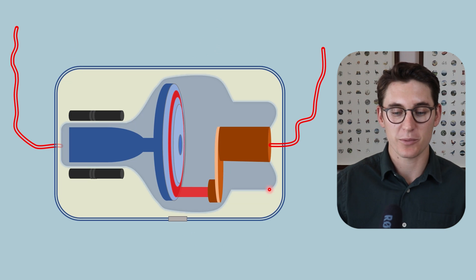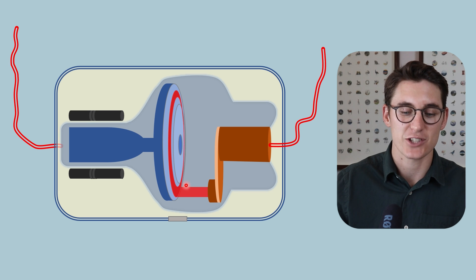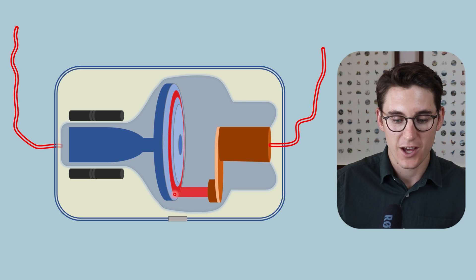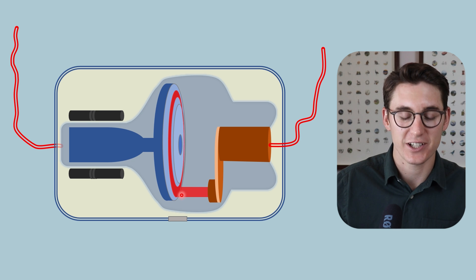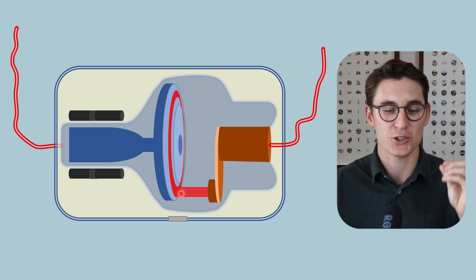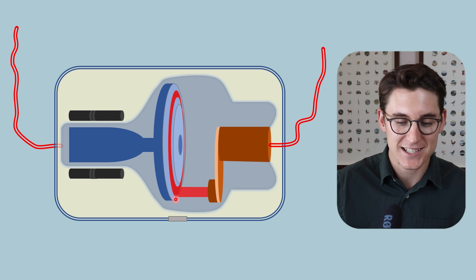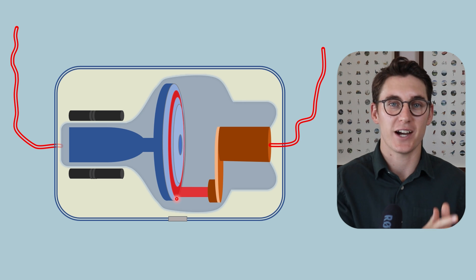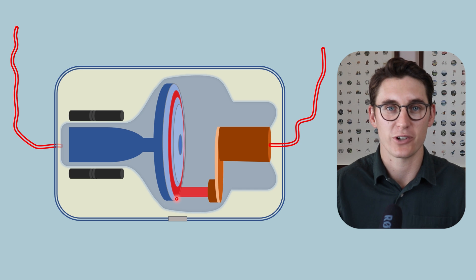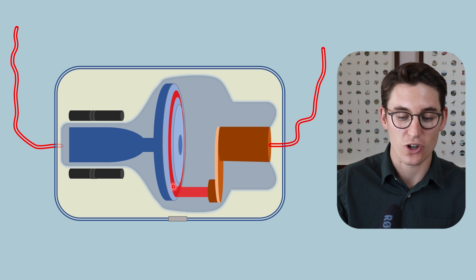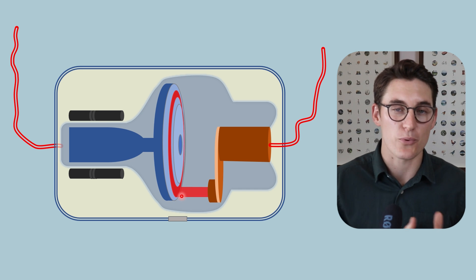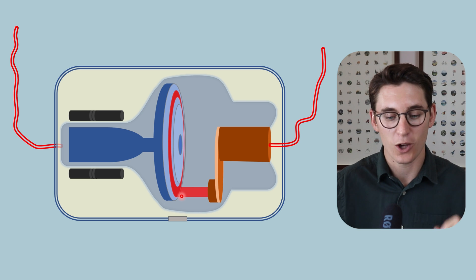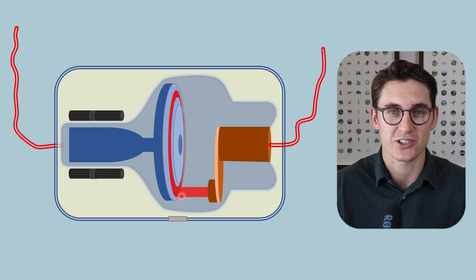As we did before, we looked at where these x-rays are produced at the actual focal spot on the anode. The vast majority of this electron energy, as a reminder, is converted into heat at the anode, and less than one percent of that energy is converted into either Bremsstrahlung or characteristic radiation. The vast majority of those x-rays will be Bremsstrahlung radiation, and a small percentage of that one percent will be characteristic radiation.